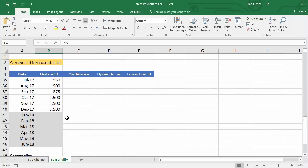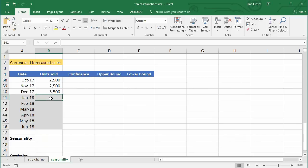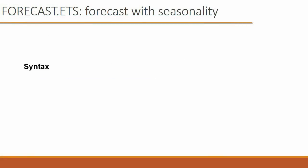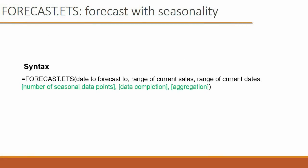The syntax is: equals FORECAST.ETS. By the way, ETS stands for Exponential Triple Smooth, which means Excel will estimate numbers based on trends and seasonality, giving the most weight to recent data declining exponentially. The first three required arguments are just like FORECAST.LINEAR: the date we're forecasting to, the range of current sales, and the range of current dates.